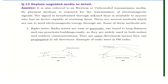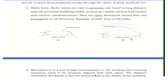First of all, radio waves. Radio waves are easy to generate, can travel long distances, and can penetrate buildings easily. They are widely used in both indoor and outdoor communication. Radio waves are omnidirectional, meaning they can propagate in all directions. An example of radio waves is FM radio.